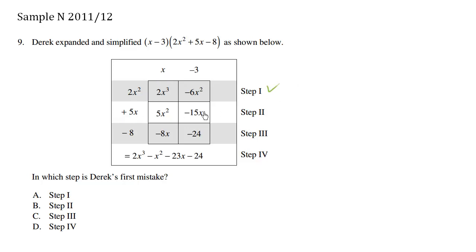We have row 2, step 2. 5x times x is 5x². 5x times -3 is -15x. Step 2 is correct.